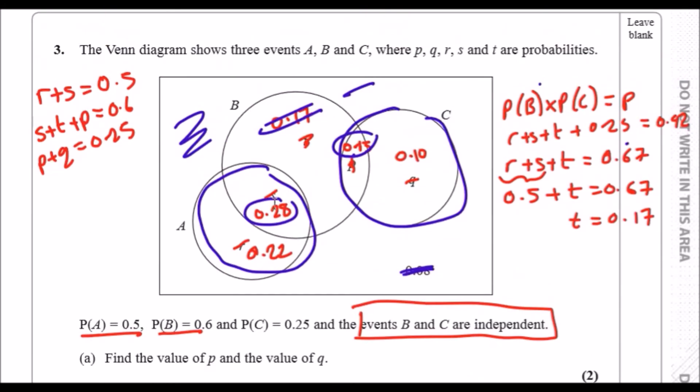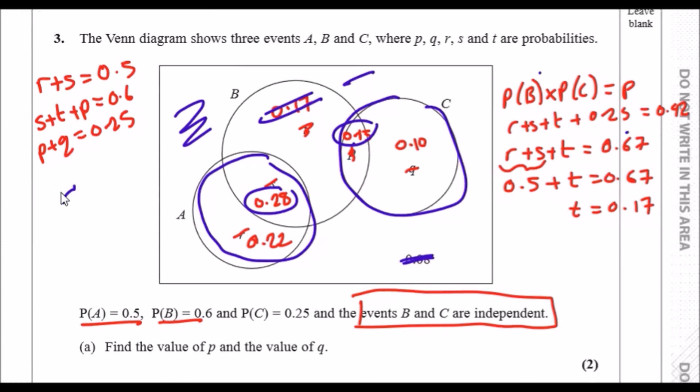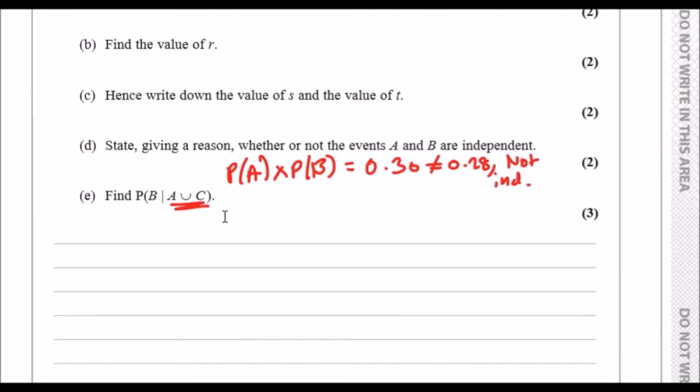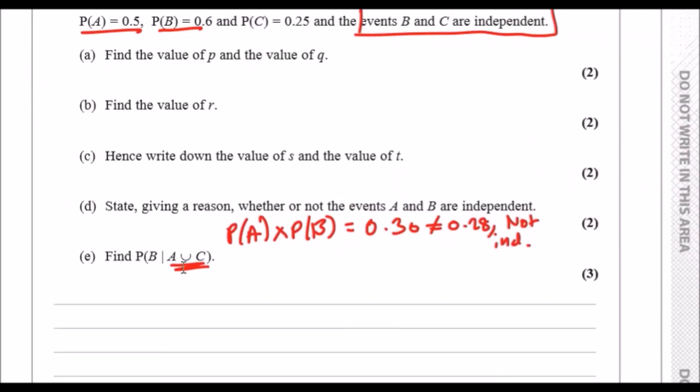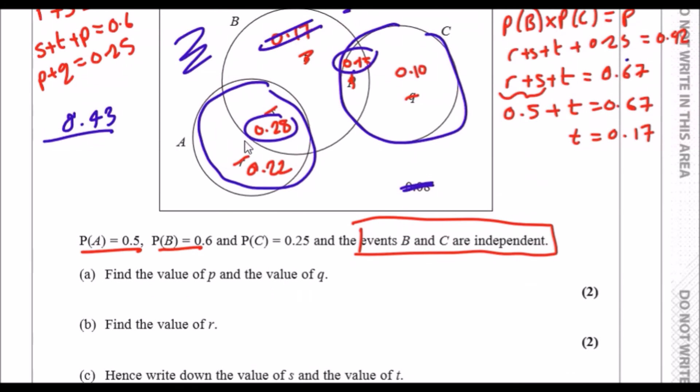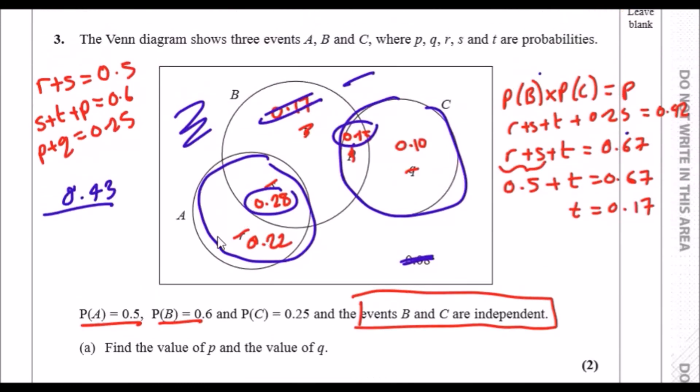So the B part is 0.28 and 0.15. Put down your calculator: 28 and 15, you should get 0.43. And now the total probability is everything that we care about. We only care about A union C, so all of A and all of C. So all of A is 22, 28, and all of C is 15, 10. So add all these up and that'll be what goes underneath.